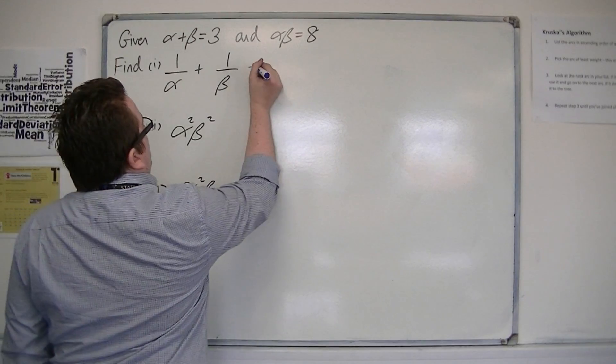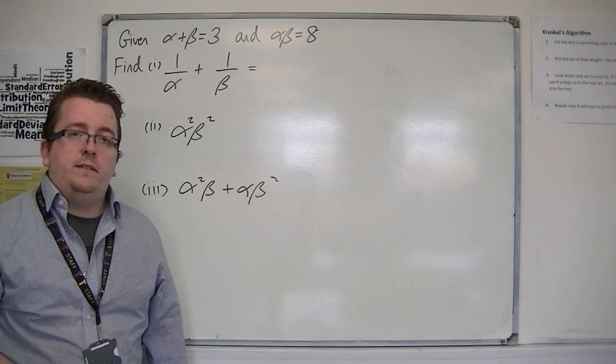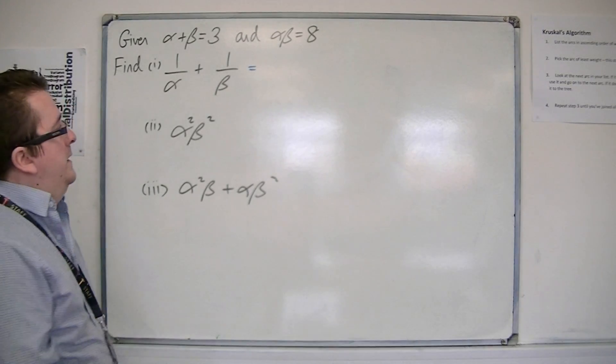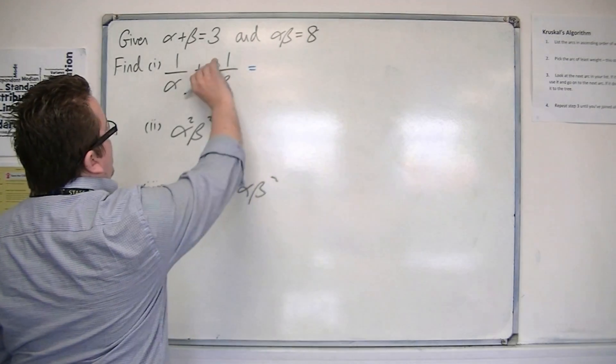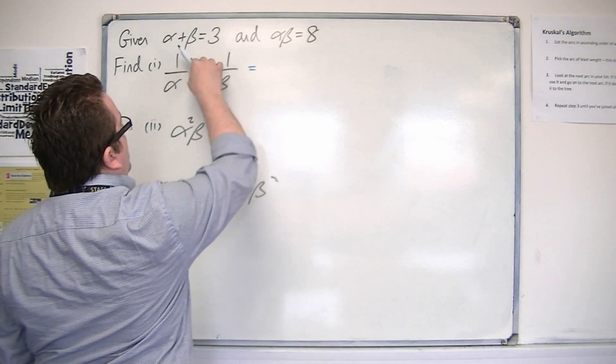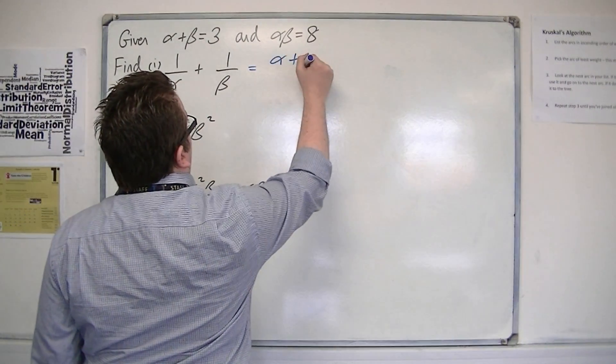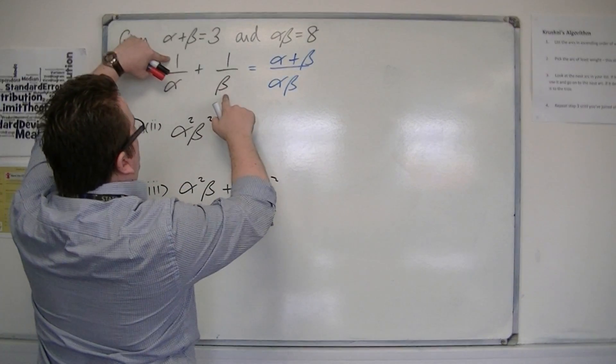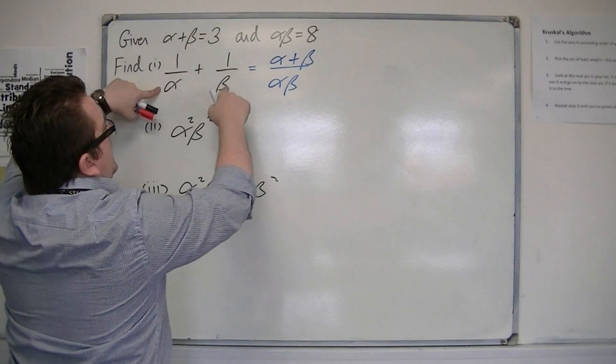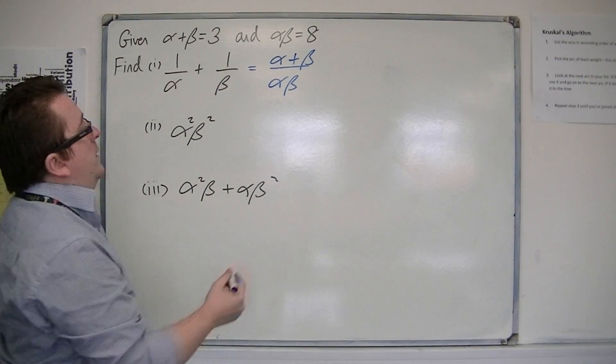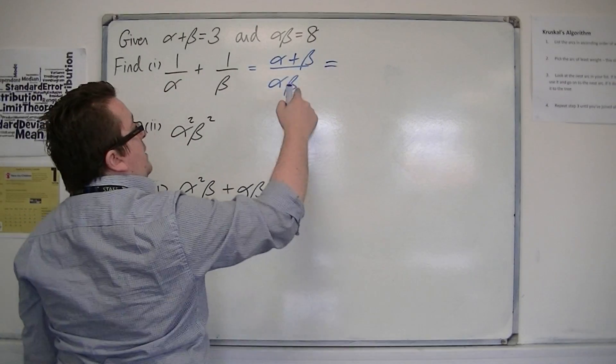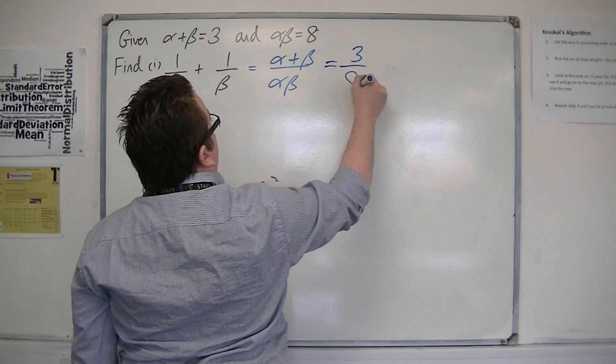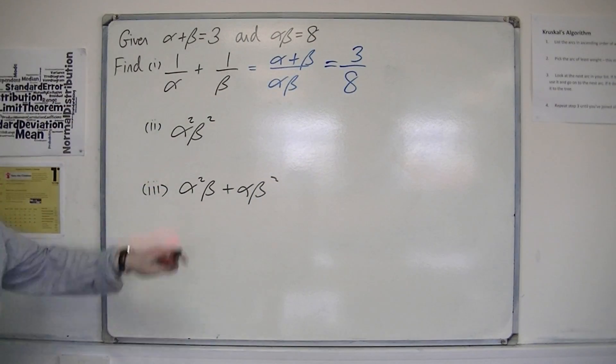With this first one, 1 over alpha plus 1 over beta, make sure you're good at adding fractions. So cross multiplication - we're going to have alpha plus beta over alpha beta. That's coming from the 1 times beta, the 1 times alpha, and the alpha times beta. So now you've got an alpha plus beta and an alpha beta. So that's 3 over 8. Three eighths would be the value of that.